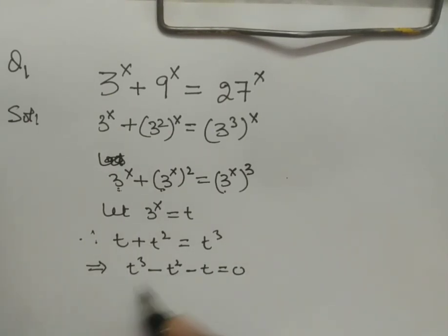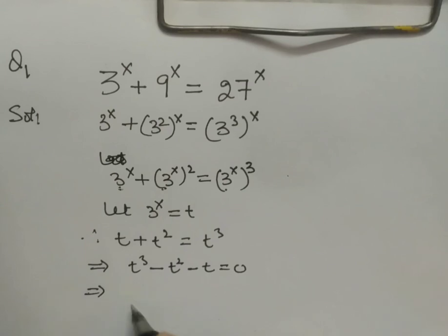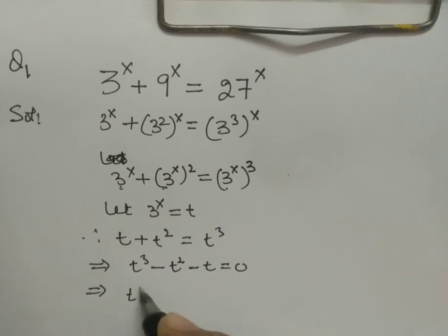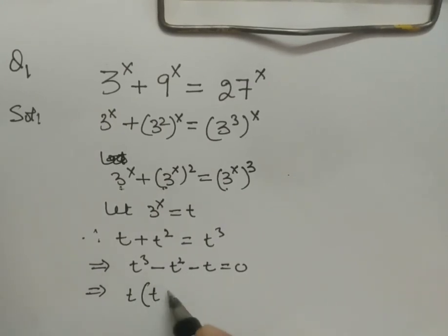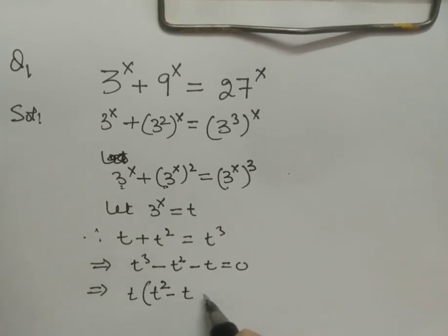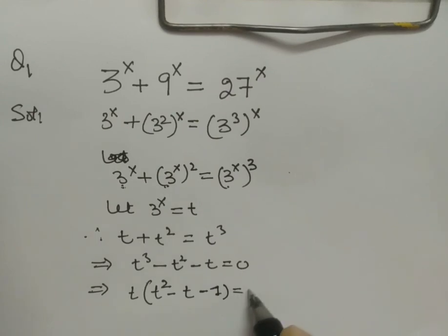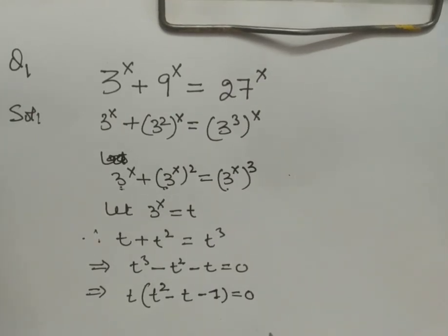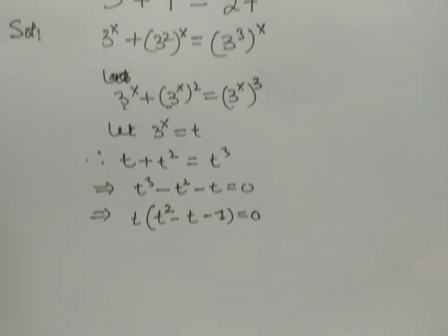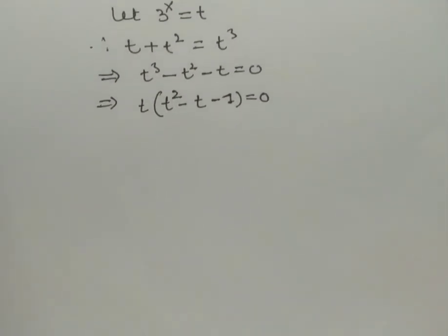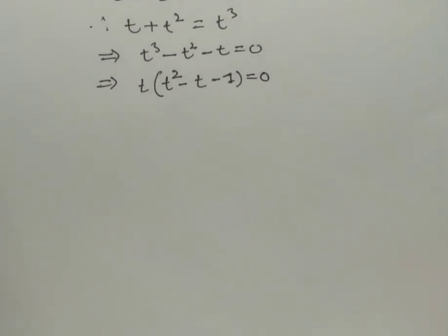Taking t common: t(t^2 - t - 1) = 0. So either t = 0, or we solve the quadratic equation t^2 - t - 1 = 0.